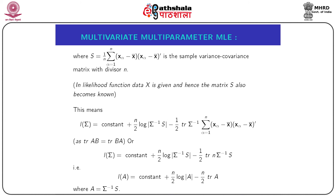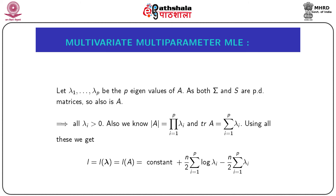Now, denoting A = Σ⁻¹S, since A is a function of Σ we can write the log-likelihood as a function of A: l(A) = constant + (n/2)·log|A| − (n/2)·trace(A). Let λ₁, λ₂, ..., λₚ be the p eigenvalues of matrix A. Since both Σ and S are positive definite matrices, A is also positive definite, so all eigenvalues λᵢ are positive.